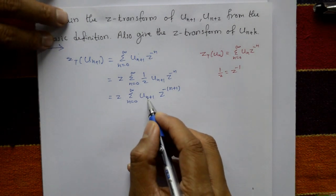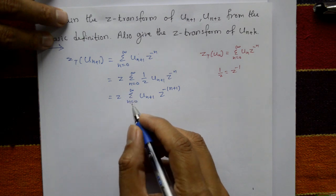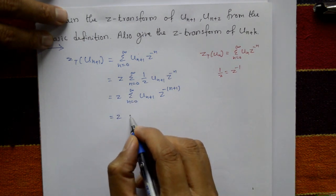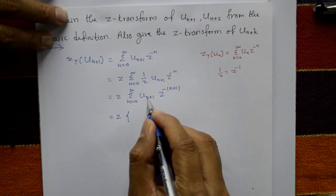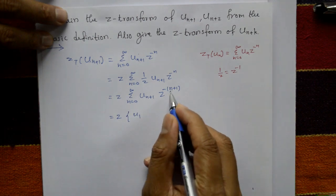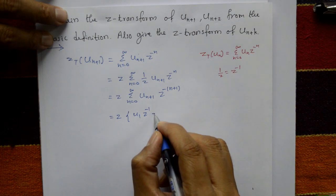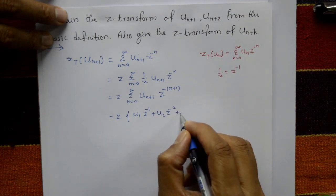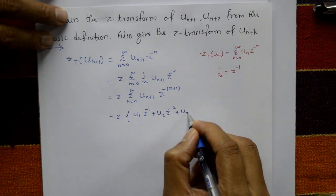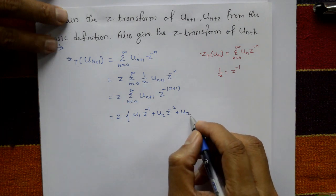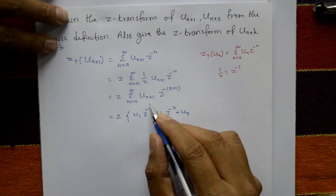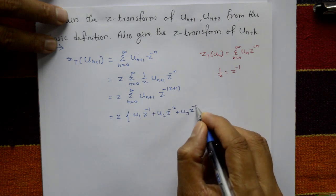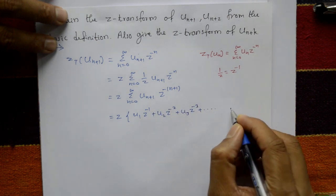Putting n=0, 1, 2, 3, ... up to infinity: when n=0 we get u(1) times Z raised to minus 1; when n=1 we get u(2) times Z raised to minus 2; when n=2 we get u(3) times Z raised to minus 3, and so on.